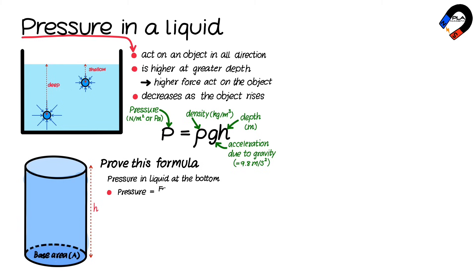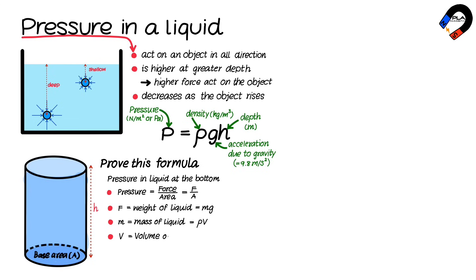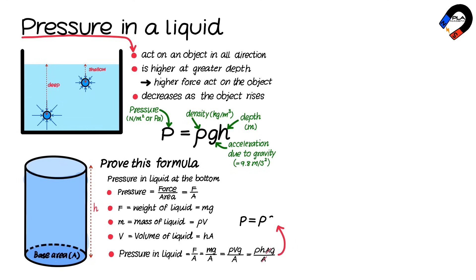We can prove this formula by considering a container filled with liquid. The pressure at the bottom is force divided by base area. The force is the weight of the liquid, equal to mass times gravity. Mass equals density times volume, and volume equals depth times base area. Substituting F = mg, m = ρV, and V = hA, we derive the equation P = ρgh.